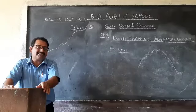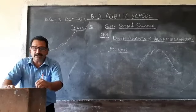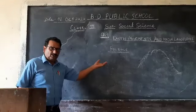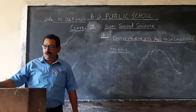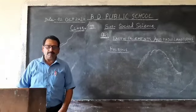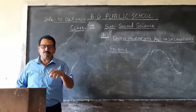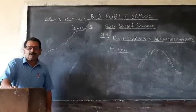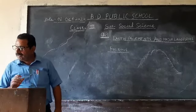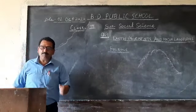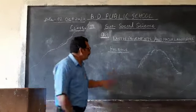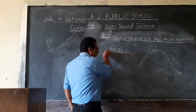The heat creates a stir inside the earth, which is of two types. There are two types of earth movements: one is the horizontal movements, which is the folding or stretching of the crust, and the second is the vertical movements, which are parts of the crust moving up and down.